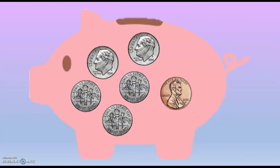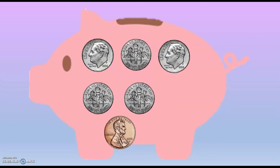In this piggy bank there are some dimes and some pennies. Let's see how much money is in this piggy bank. The first thing I'm going to do is make sure that all of my dimes are together and all of my pennies. I only have one penny because it's there at the end. Let's count by tens and ones to figure out how much money we have.